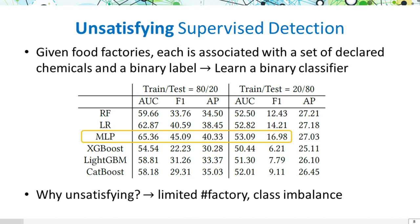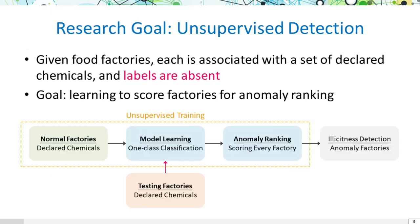An intuitive approach to AI detection is supervised learning based on declaration tabular data. However, well-known predictors such as tree-based models and MLP produce unsatisfying results. We resort to unsupervised learning because it can operate without labeled examples and has the potential to uncover hidden patterns and anomalies. Given food factories, each associated with a set of declared chemicals and absent labels, our goal is to learn to score illicit factories.